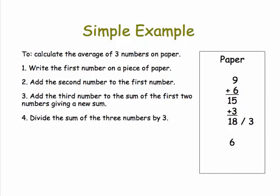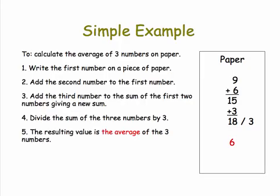Step four is divide the sum of the numbers by three, giving us six. And step five is stop, that the resulting value is the average of the three numbers. As you can see, each step is very precise. Each step is very doable by means of a simple arithmetic operation.